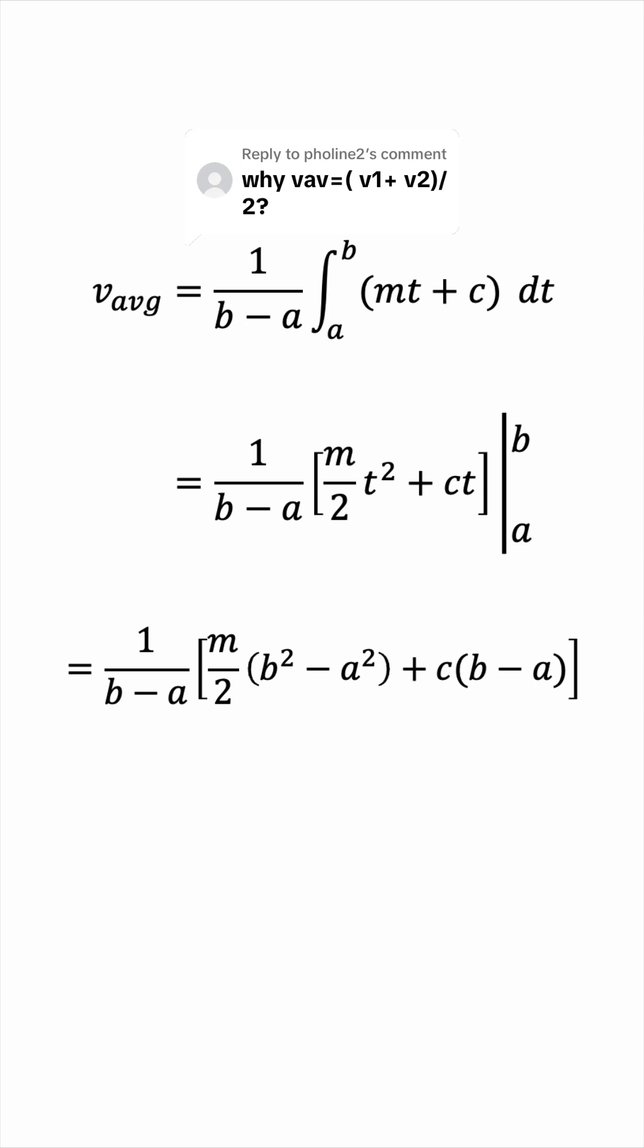Now we can factor the b squared minus a squared, and that will give us this expression. Notice that the b minus a will cancel, and we're left with m over 2 times b plus a plus c.